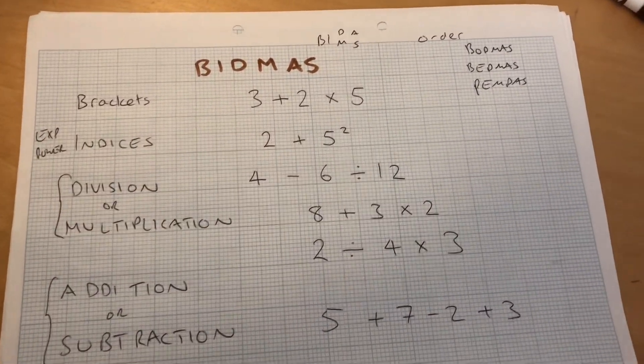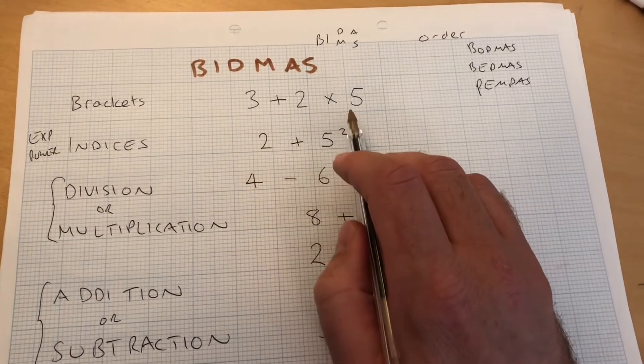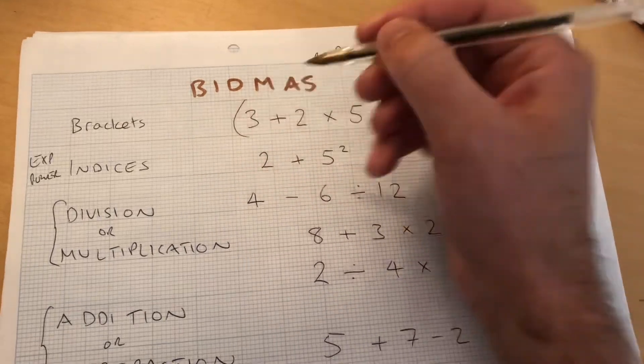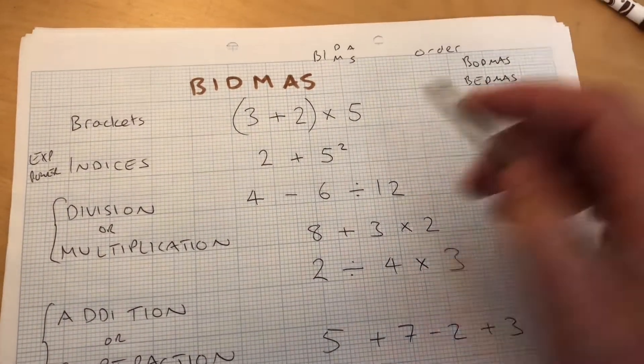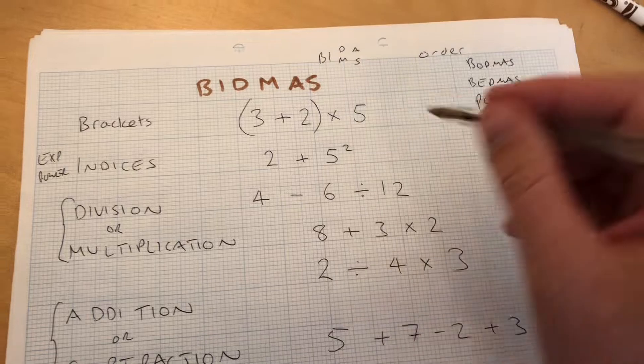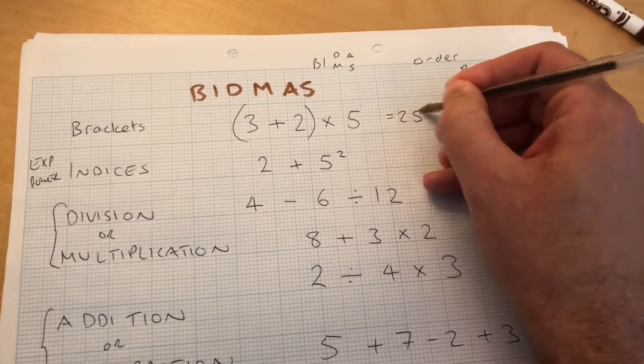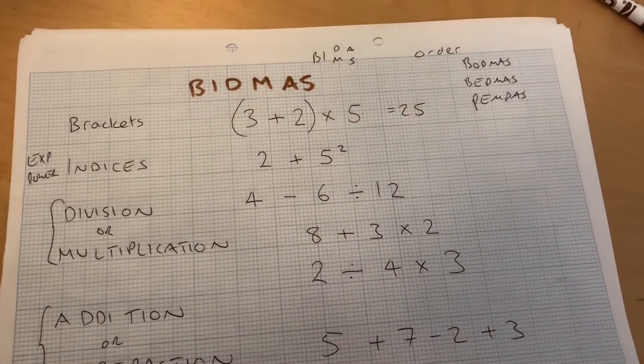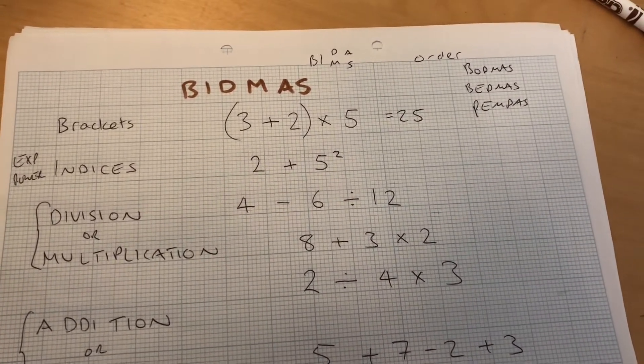What do I mean by the brackets? Well, if I have the sum 3 plus 2 times 5, we would do the multiplication first. But if there were brackets there, we'd do what's inside the bracket. So 3 plus 2 is 5, and then times that by 5. If we didn't have the brackets there, then we'd go through the next order of importance, which would have been multiplication.